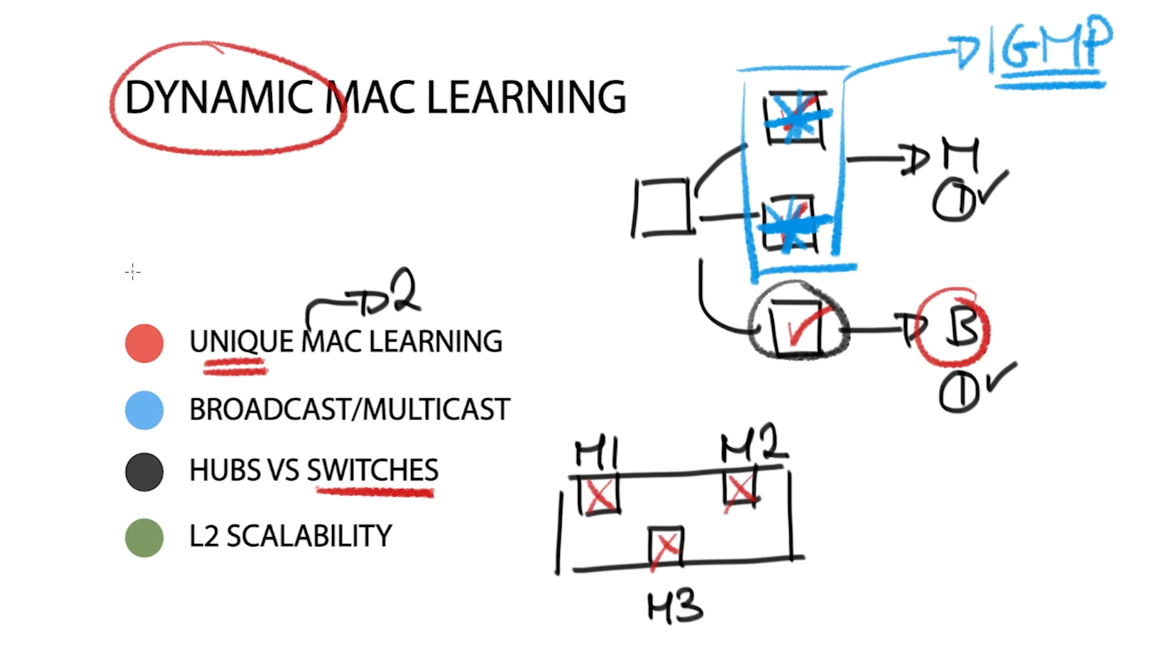This enables switches to direct traffic instead of broadcasting to everyone and every port apart from the receive port. However, when a switch doesn't know what to do with the frame, it will still flood the unknown unicast frame. Flooding means it gets sent to all of the ports in the same received VLAN.